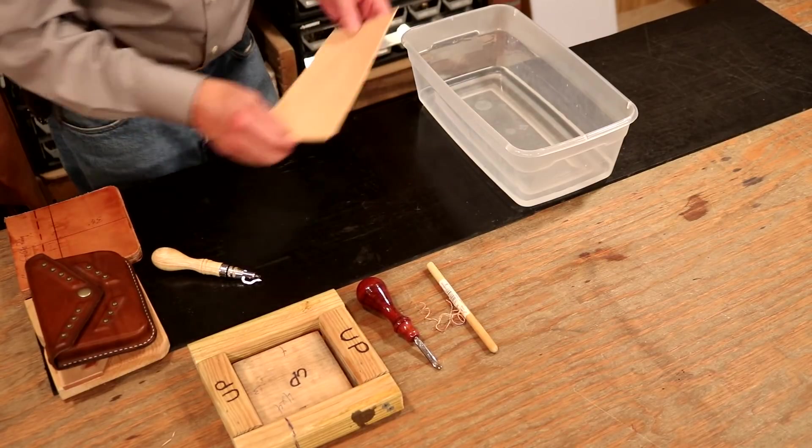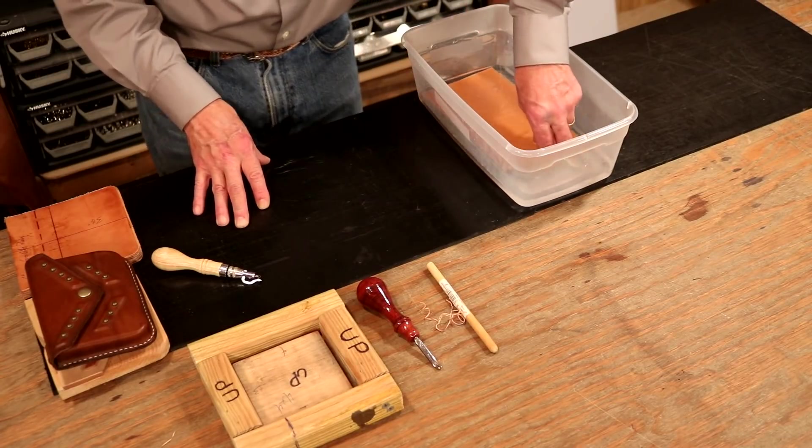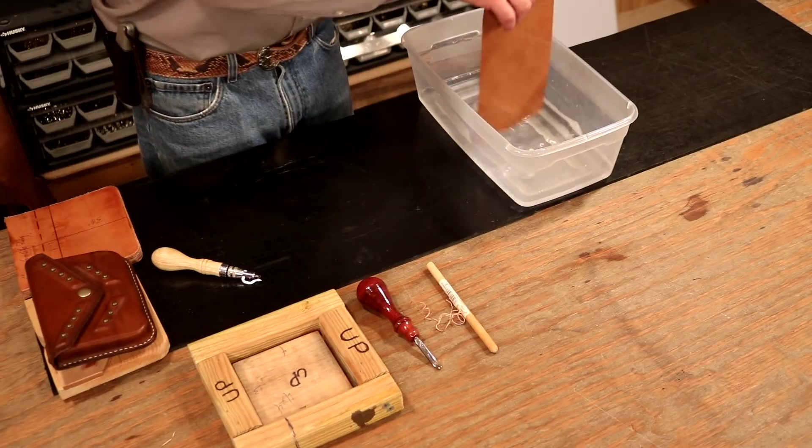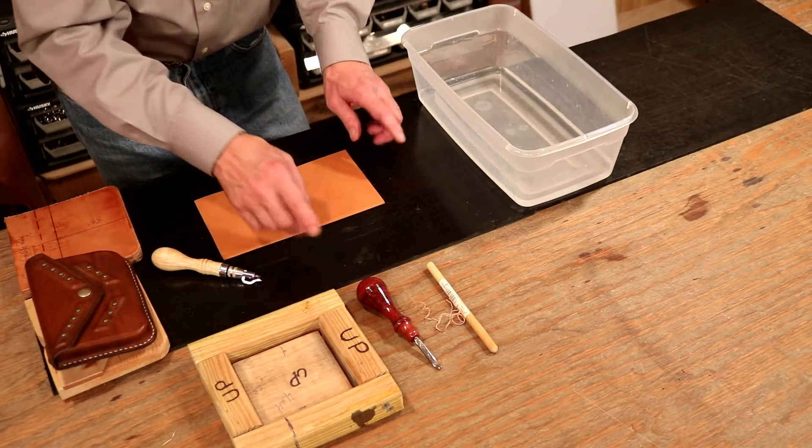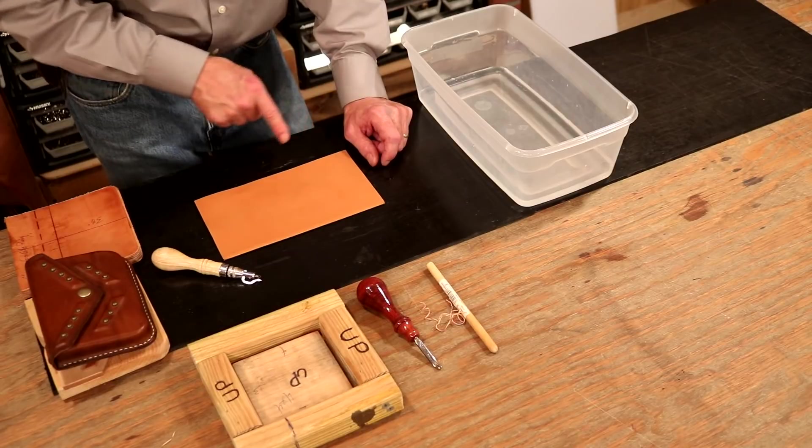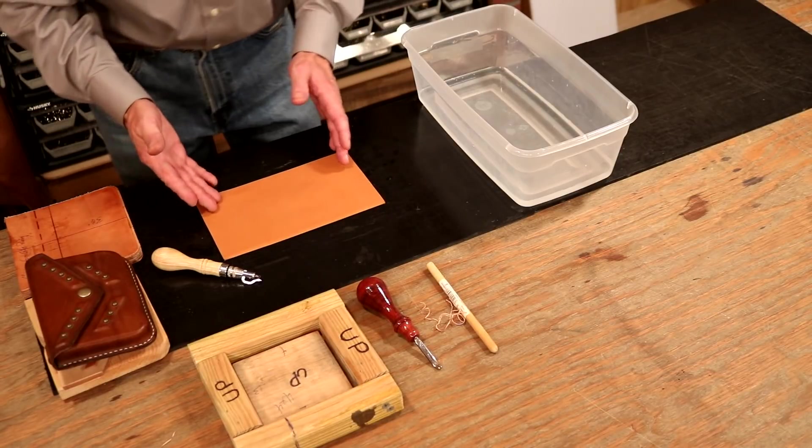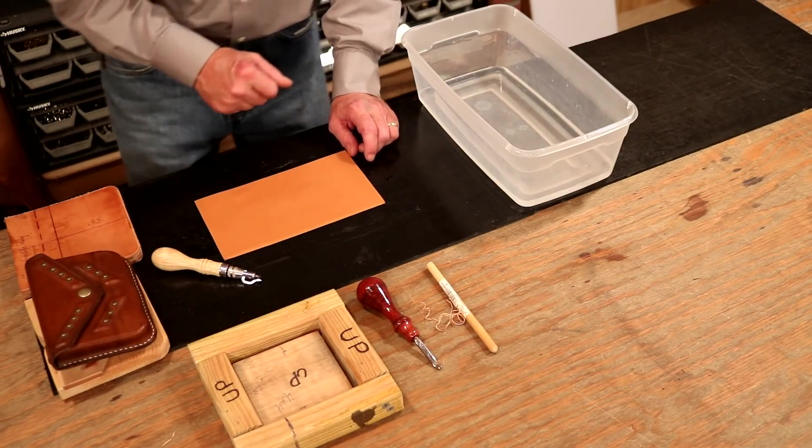So we're not casing this. We're just going to get this good and wet. I'll drop that in. Let's give it maybe 10 seconds. There we go. I can feel that. So let's bring that out. Again, we're going to put it on a surface that's not going to absorb the moisture from the leather. Let's give this piece maybe about 20 minutes. Then we're going to come back and form this and we'll talk about some mold possibilities.